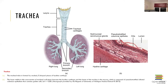The trachea, also known as the windpipe, is a tough, flexible tube that conducts air toward the lungs. Its diameter is about two and a half centimeters, and it lies within the mediastinum. The tracheal cartilages are C-shaped rings made of hyaline cartilage; they stiffen the tracheal walls and help protect the airway.